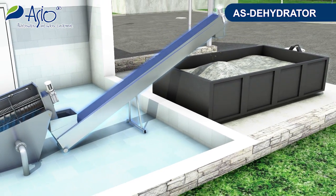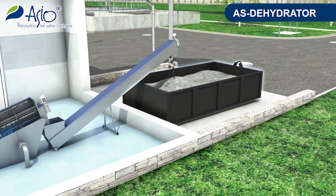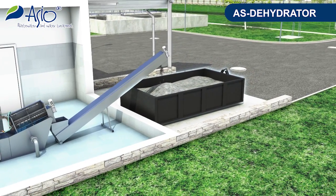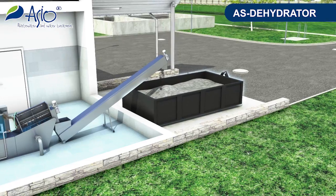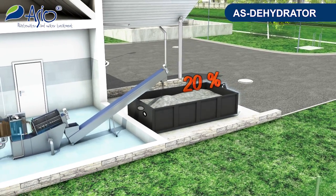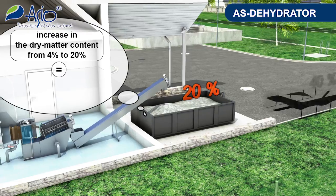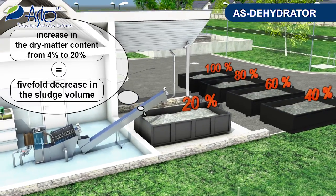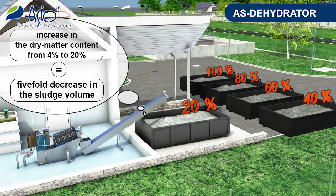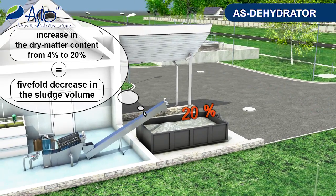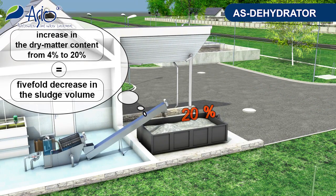The dewatered sludge is then usually placed into a container and can be used, for instance, in composting plants. It is worth noting that the increase in dry matter content from 4% to 20% represents a roughly five-fold decrease in sludge volume, resulting in a considerable reduction of transport and disposal costs.